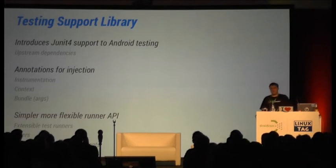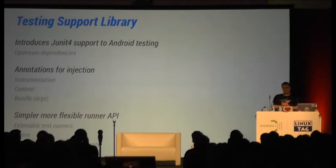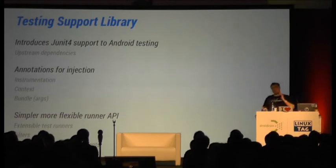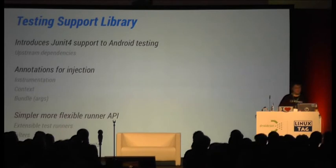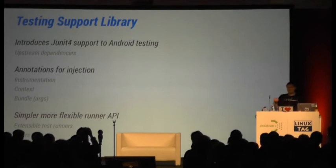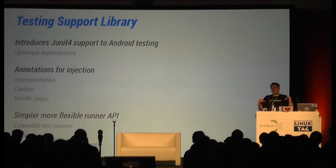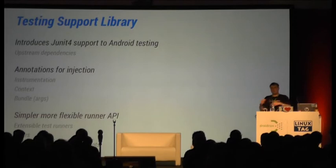The other thing we're going to introduce are annotations. If you want to get a reference to the instrumentation, you just use an annotation for that. You can even get your hands on the bundle used to start the instrumentation. The third thing we're going to work on is a more simplified runner API, because right now there are a bunch of testing frameworks out there and everybody uses its own test runner — it's really hard to keep all of those tests in the same folder or package.